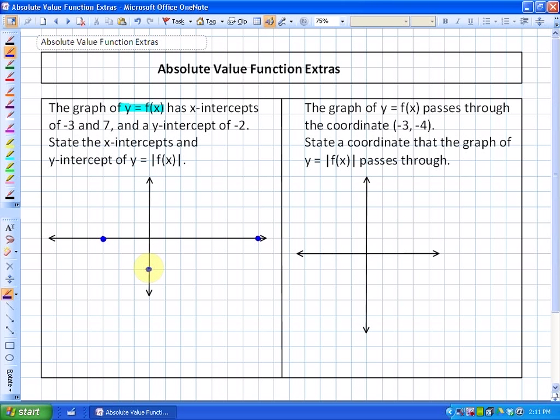What it's asking next is state the x-intercepts and y-intercept of its absolute value function. What we learned in the previous lesson is the only thing that gets flipped, or the only thing that we take the absolute value of, is the output. So in this particular case,